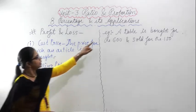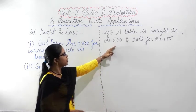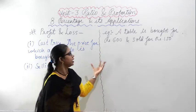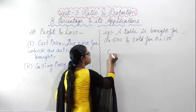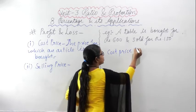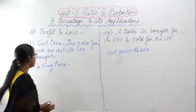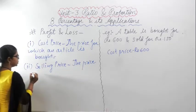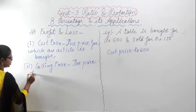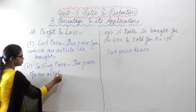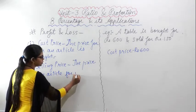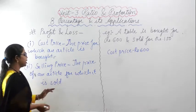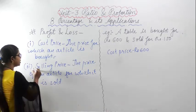For example, a table is bought for Rs. 600 — that means you went to a market and purchased a table for Rs. 600, so Rs. 600 is the cost price. Similarly, the selling price is the price of an article for which it is sold; that is known as the selling price of the article.